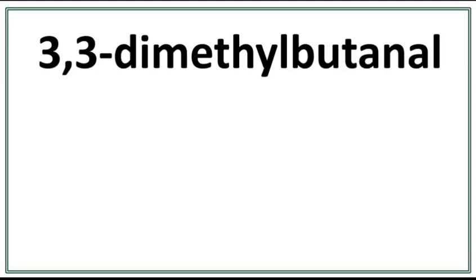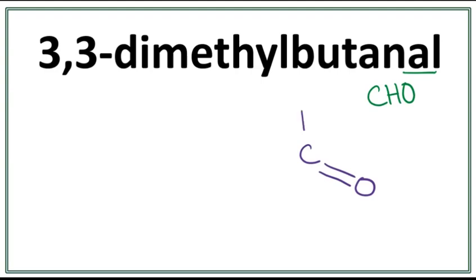Let's draw the structure for 3,3-dimethyl butanal. The 'al' here means that this is an aldehyde. An aldehyde has a functional group of CHO. The carbon has a double bond with the oxygen and a single bond with the hydrogen. The 'but' here means that there are four carbons in the longest carbon chain. A trick to draw this is that you always count till 1 less than the number of carbons you want to draw. So 1, 2, 3.